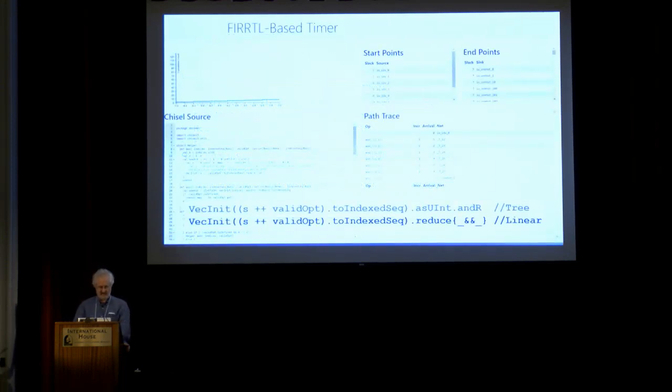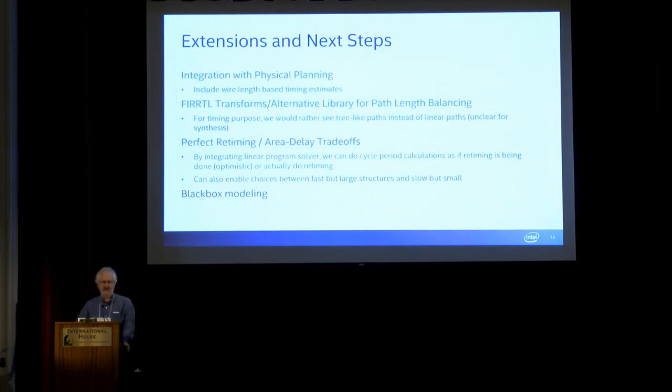So, this is a case of that. If you change the code just a little bit and you change it from andR, which is how I ended up implementing that AND gate, to reduce with an AND, you think that that's another perfectly legitimate way of writing the code. But when you do that, you end up with this chain of a bunch of AND gates in series, as you can see here.